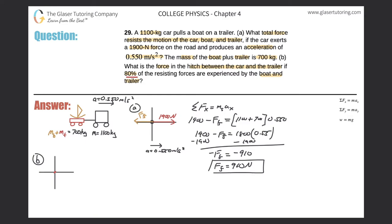First, 80% of the total resistive forces are experienced by the boat and trailer. So: 910 newtons times 0.80 equals 728 newtons pointing to the left, resisting the motion. There's also a tension force from the hitch — the car is pulling the trailer and boat to the right.